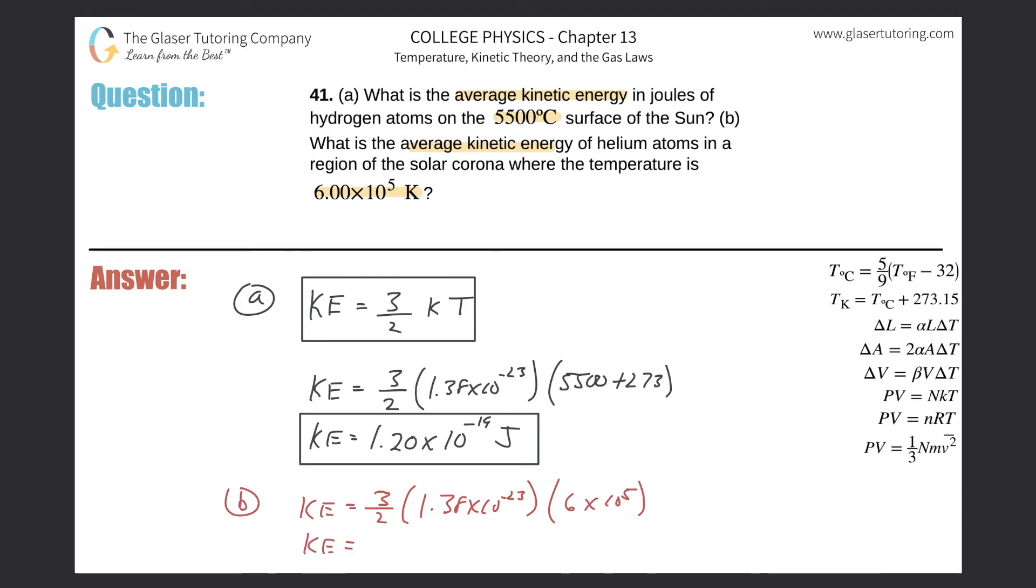And let's see what this works out to be. So 3 over 2 times 1.38 times 10 to the minus 23 multiplied by 6 times 10 to the fifth. And here we get a value of about 1.24 times 10 raised to the minus 17th. And that is again in joules.